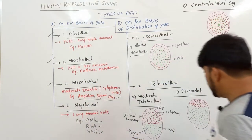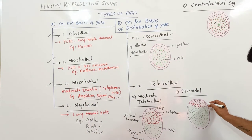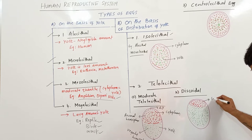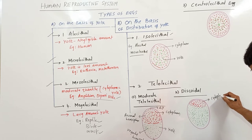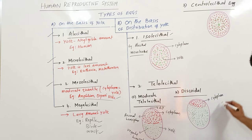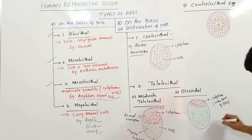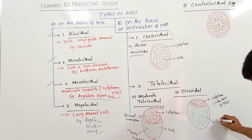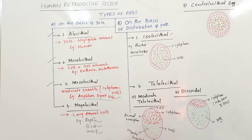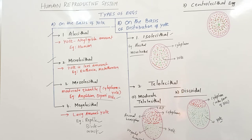Next, discoidal type of eggs. In discoidal type, cytoplasm is present at one end in the form of a disc, whereas most of the egg is completely filled with yolk. This is discoidal Telolecithal. In both moderate and discoidal types, yolk is distributed unevenly.